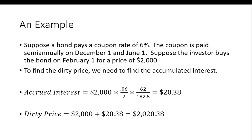So this accrued interest is $2,000 times 0.06 divided by 2. That is, you're getting 3% interest every six months, times 62 divided by 182.5. The 62 is the number of days between the last coupon payment December 1st and February 1st, and 182.5, that's half a year. So if you work this out, it's $20.38.